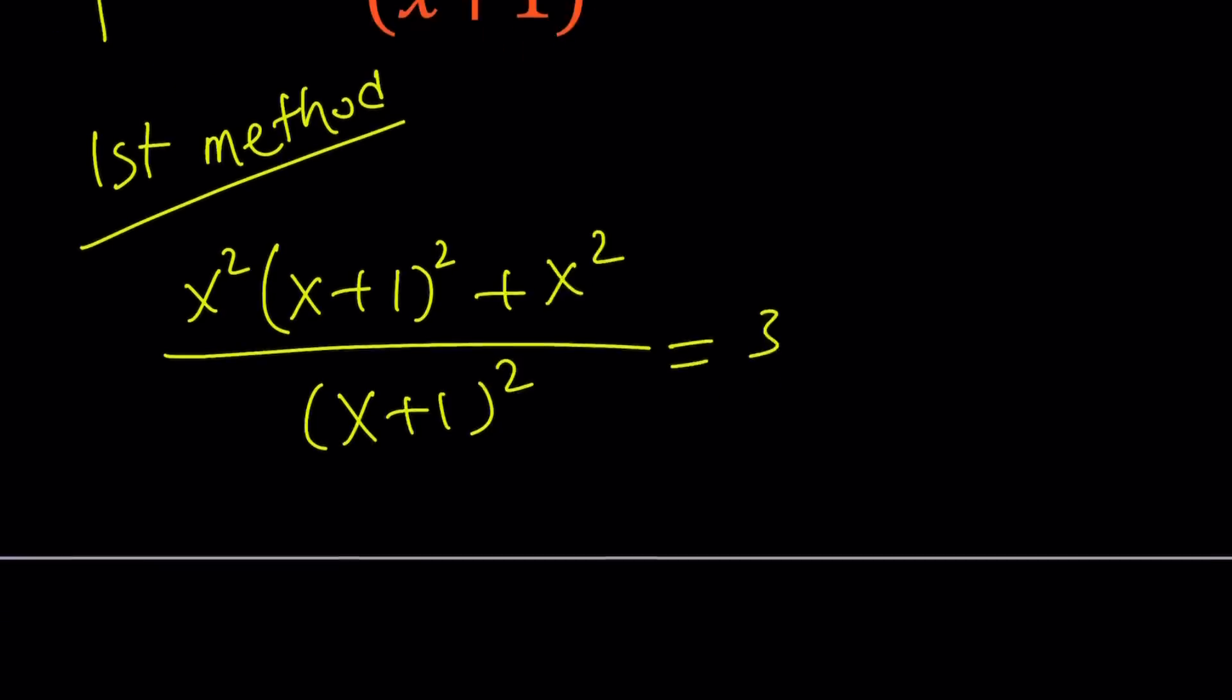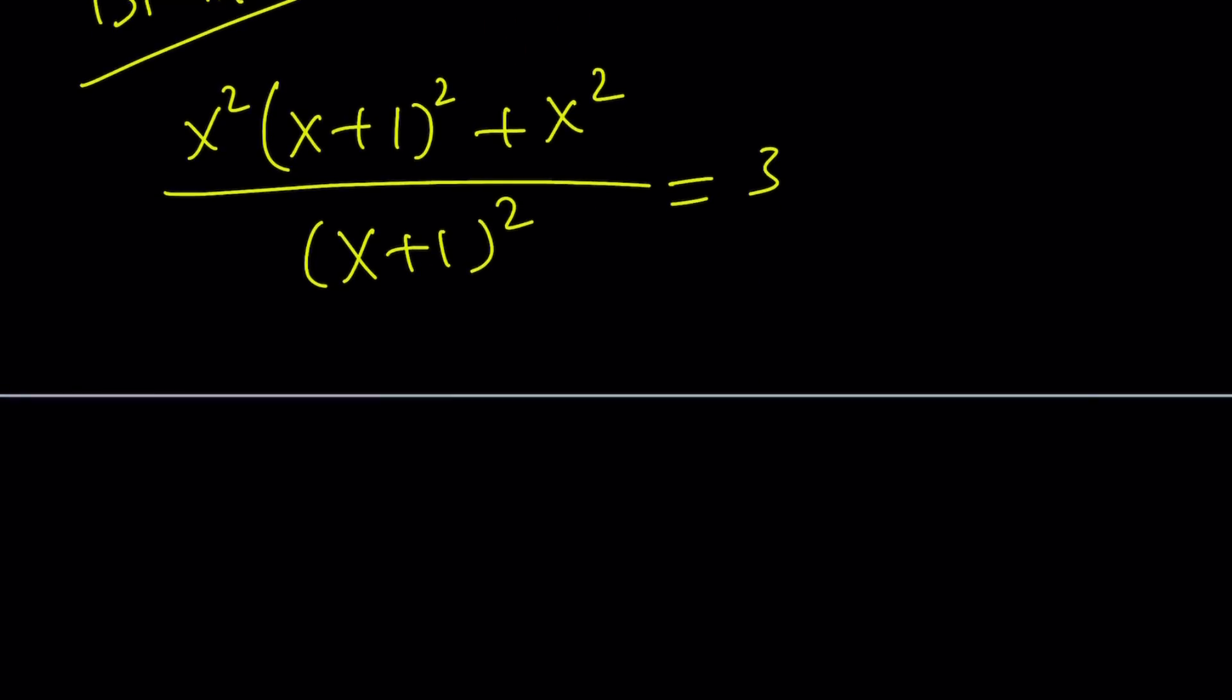So we're going to simplify the numerator and denominator and then cross multiply. x squared will be multiplied by x squared plus 2x plus 1, and then we're going to add x squared. And at the bottom we're just going to have x squared plus 2x plus 1.